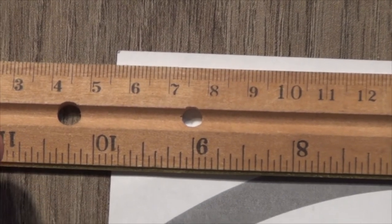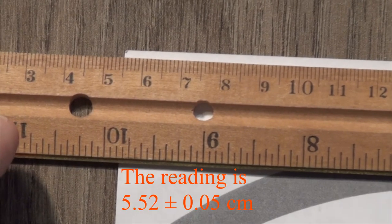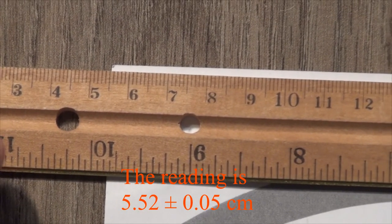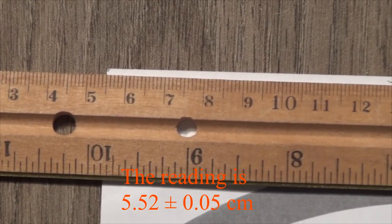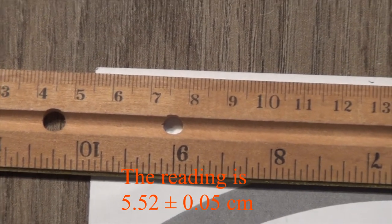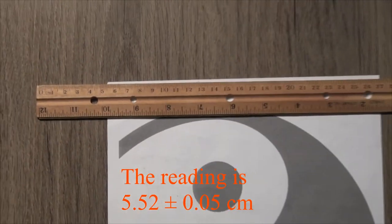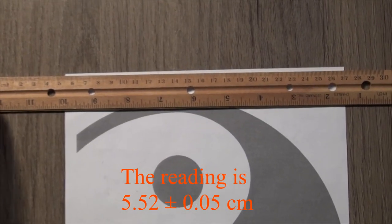Our rule of thumb is to take the experimental uncertainty in the last measured digit to be plus or minus one half of the smallest division of our instrument. So the reading is 5.52 plus or minus 0.05 centimeters.